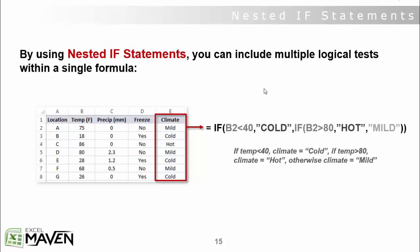Basically, the syntax should look familiar. You start with your logical test. B2 is less than 40. Your value if true. So in this case, if your test is true, if your temperature is less than 40, climate equals cold. Now here's the catch. When you get to the value if false piece, here's where you start your next if test.